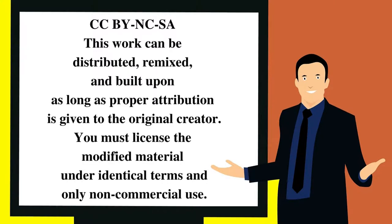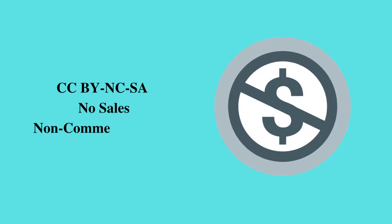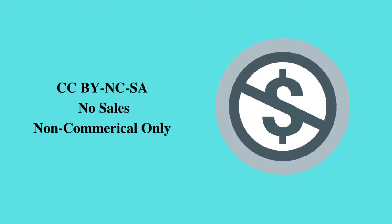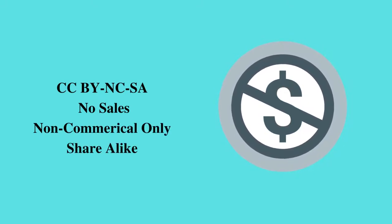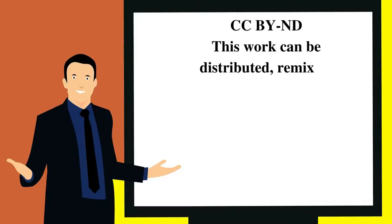Next up is CC BY-NC-SA. As you can see, the licenses build on each other — we've now seen all of these terms before, but now they are all in a single license. The key here is to follow all the different limitations: you can give the work away, perform it, copy it, and make derivatives, but you cannot do so for commercial purposes, and you must share the modified work under identical terms. And of course, you have to give attribution.